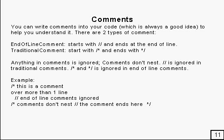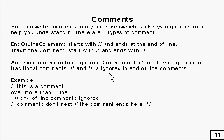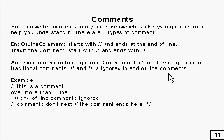Here's something nice and easy to understand: comments. You can write comments in your code in two different ways, and it's always a good idea to put them in. There's the end-of-line comment — which we've seen — it starts with double slash and ends at the end of the line, and the traditional comment which starts with slash-star and ends with star-slash. Anything in comments is completely ignored by the compiler. They don't nest, and double slash is ignored inside a traditional comment, and the traditional comment markers are ignored inside end-of-line comments.